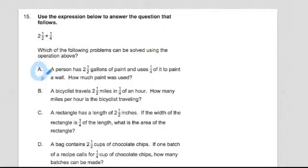Now we have our possibilities. A person has two gallons of paint and uses one fourth of it to paint a wall. How much paint was used? A bicyclist travels two and a half miles in one fourth of an hour. How many miles per hour is a bicyclist traveling? A rectangle has a length of two and a half inches. If the width of the rectangle is one fourth of the length, what is the area of the rectangle? And D, we'll get to D in a few minutes.